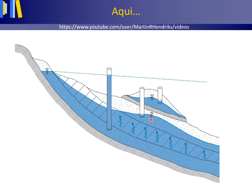A confining layer is a subsurface layer with little or no water permeability. Confining layers that totally block groundwater flow are impermeable layers or aquifuges. Confining layers with low water permeability are called semi-permeable layers, leaky confining layers, or aquitards.